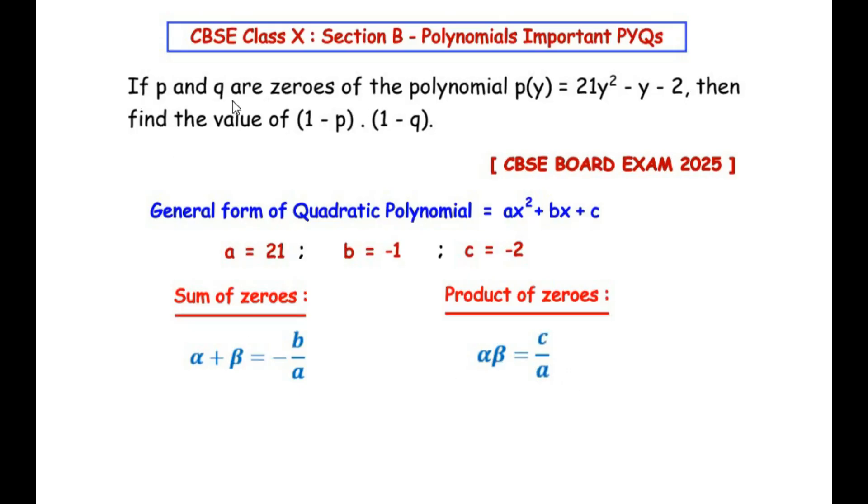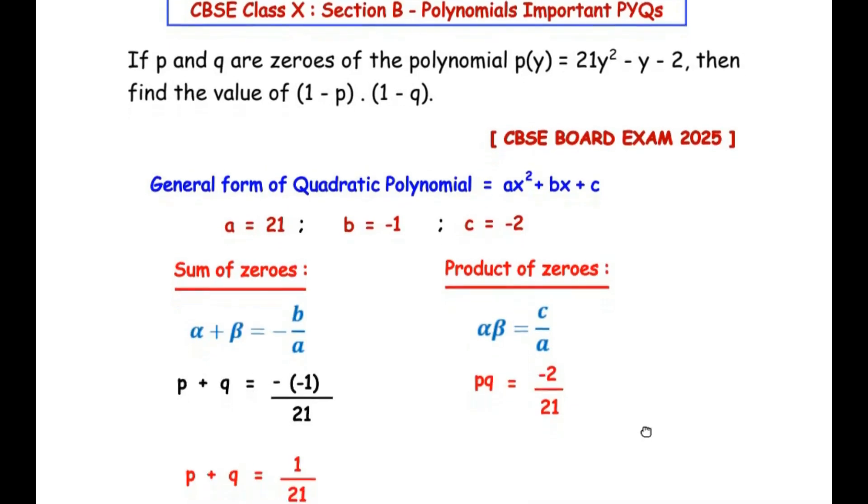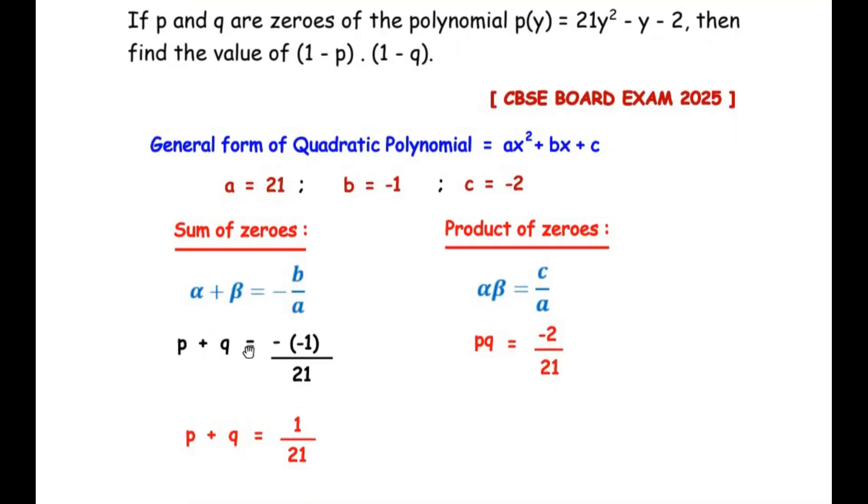Now here they have already mentioned that p and q are zeros. So here let us consider alpha as p and beta as q. So we have p + q = -(-1)/21. Simplifying this we get p + q = 1/21. Now for product of zeros we have pq = -2/21.